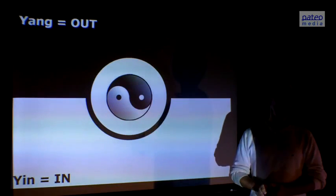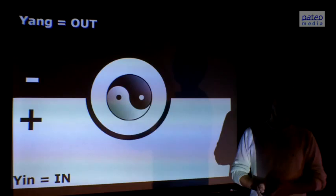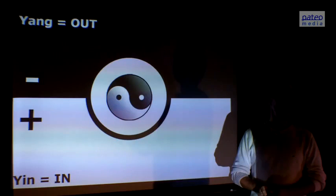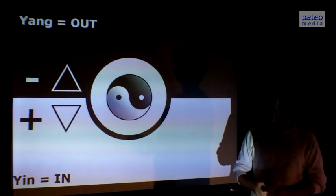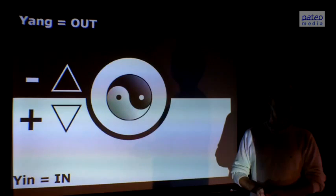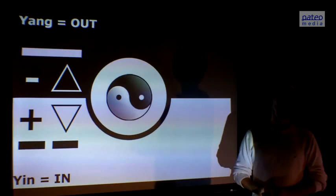And these four types are also present in this ancient symbol of Tao. Yang means out, yin means in. You can also say yin is positive, yang is negative, or you can use the triangles again: pointed down is yin, pointed up is yang, or you can use the lines from the I Ching.